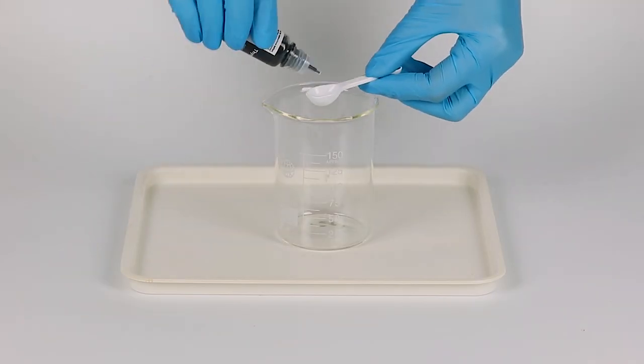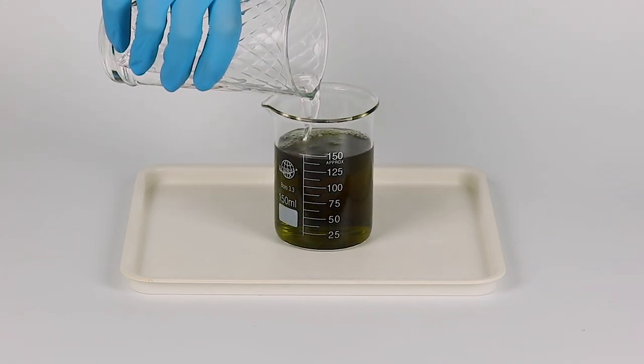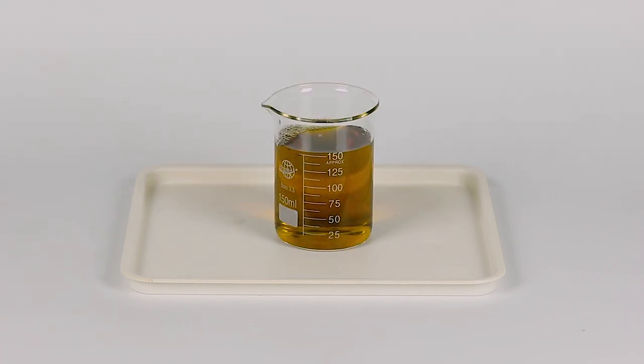Pour one big measuring spoon of thymol blue into the beaker. Then fill the beaker with water, approximately to the 150 milliliter point. Normally thymol blue turns yellow or even orange when diluted.